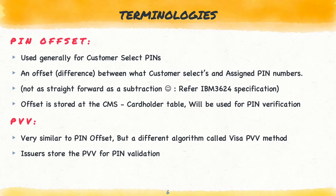The last two terminologies are PIN offset and PVV. These two are usually used for storing PINs in the cardholder databases. PIN offset is the difference between a PIN value selected by the customer against the PIN number that would have been naturally assigned by the issuer. It is done using a specific algorithm called the IBM 3624 specification. This PIN offset is subsequently stored in the cardholder database and used for PIN validation during the next transaction.